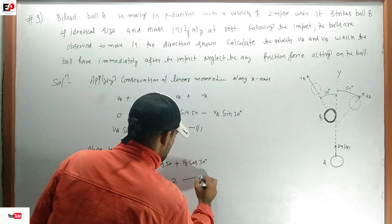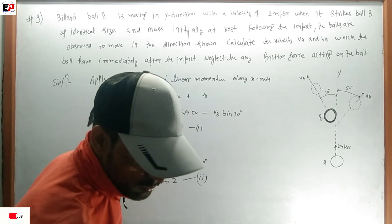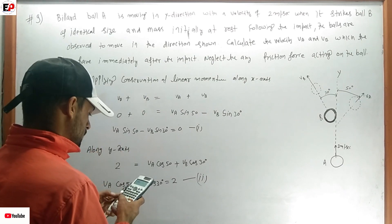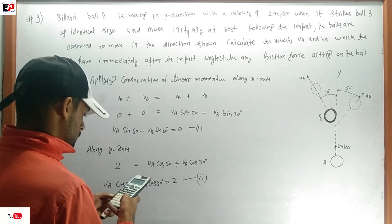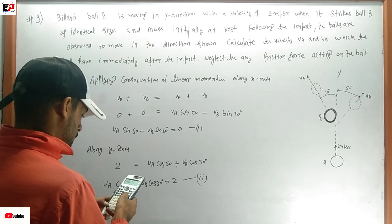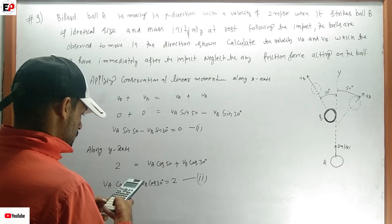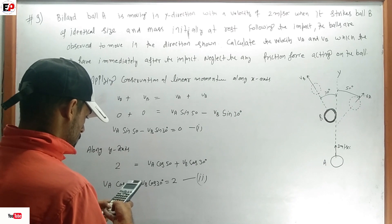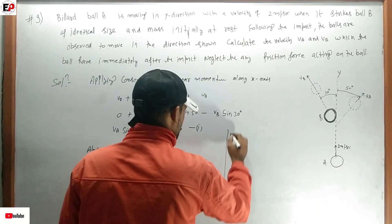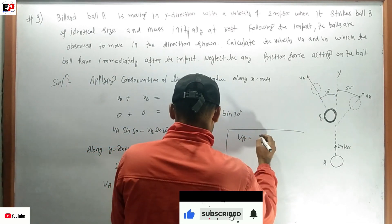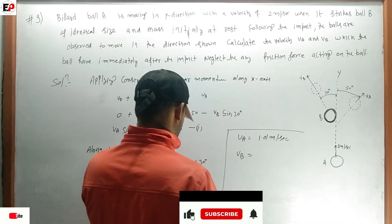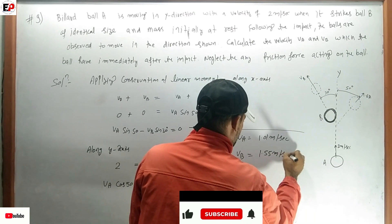Using equation 1 and equation 2: VA*sin50° minus VB*sin30° equals zero, and VA*cos50° plus VB*cos30° equals 2. Solving these equations: VA is equal to 1.01 meters per second and VB is equal to 1.55 meters per second.